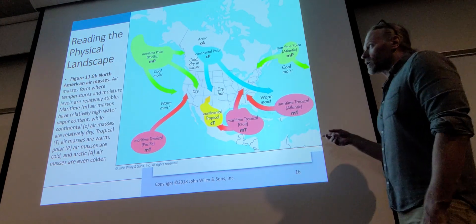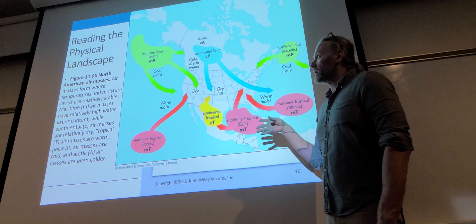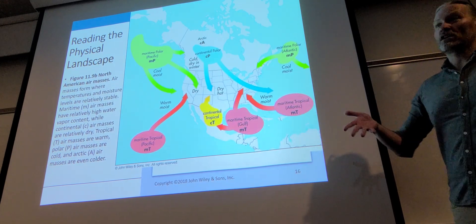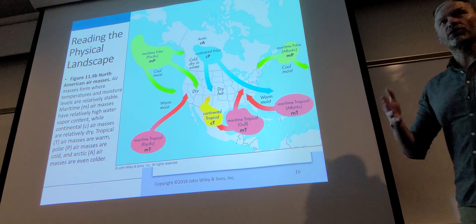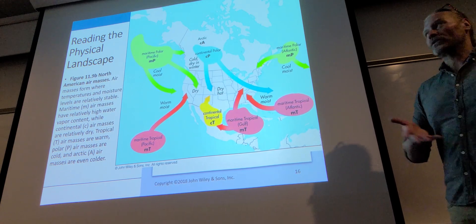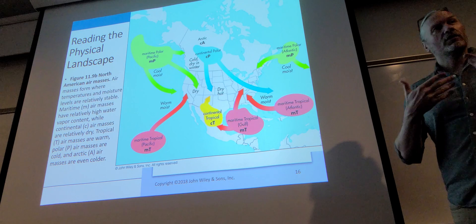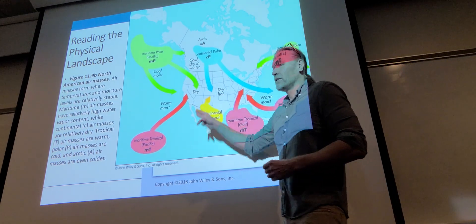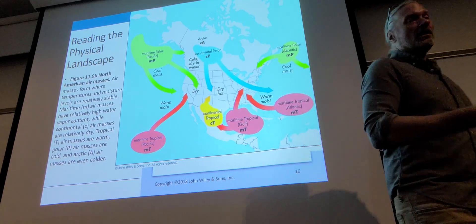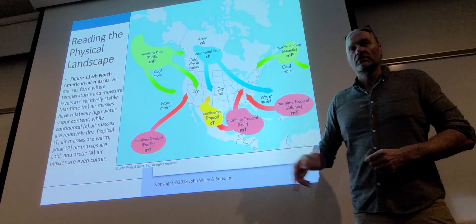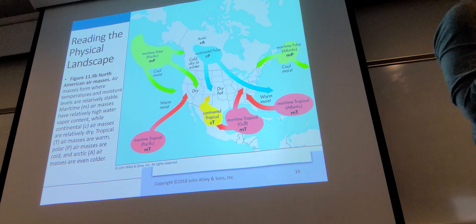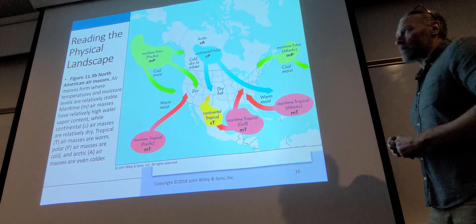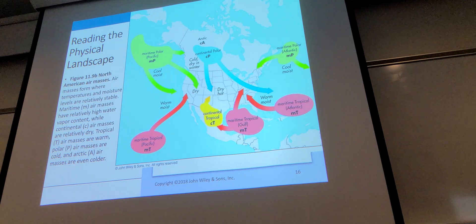This map looks more complicated than it is. When it comes to air masses: if an air mass is coming from the north, it's cold; if it's coming from the south, it will be warm. If an air mass is coming over land, it's going to be drier; if it's coming from water, it's going to be moist. Very logical, very simple — kind of an overly complicated map, but pretty simple concepts.